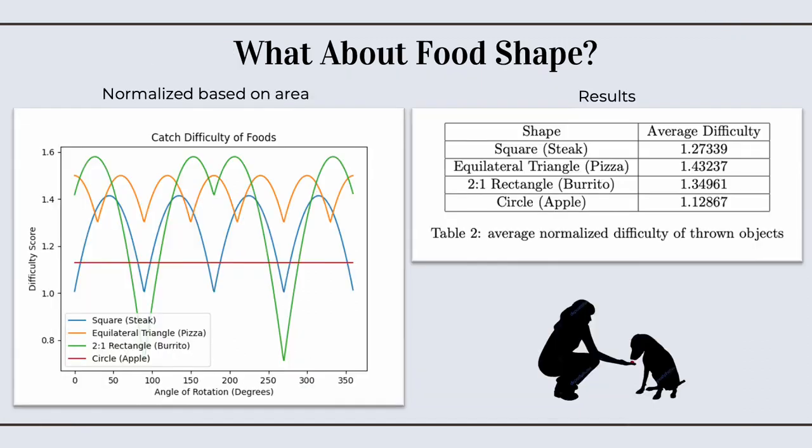I'm Caleb, and we'll be going over how to determine how difficult it is to catch each food object. To determine how difficult a rotating shape is to catch, we normalized the area of each shape to 1. We then made a difficulty score based on how difficult it is for Fritz to catch each of these objects. This difficulty score is determined by the maximum horizontal distance between two of the object's vertices.